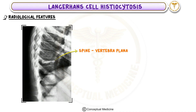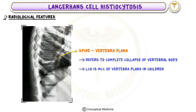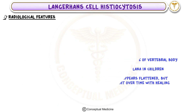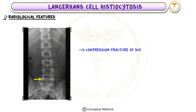2. Spine — Vertebra plana: One of the classic findings in LCH is vertebra plana, which refers to the complete collapse of a vertebral body. This is the most common cause of vertebra plana in children. On X-ray, the affected vertebra appears flattened, but interestingly it may regain height over time with healing. In addition, there is compression fracture of the superior endplate of the L3 vertebral body.